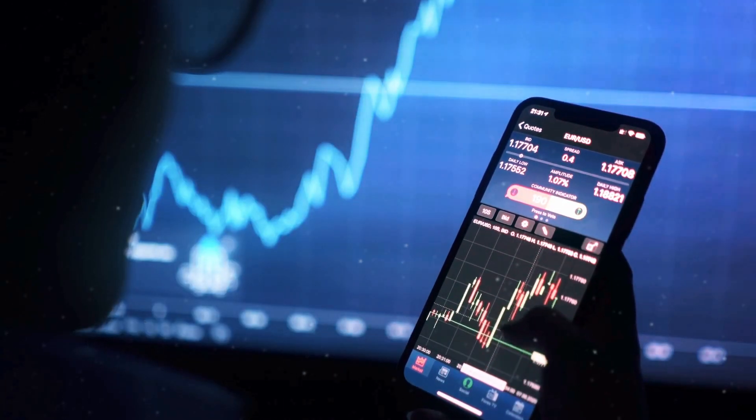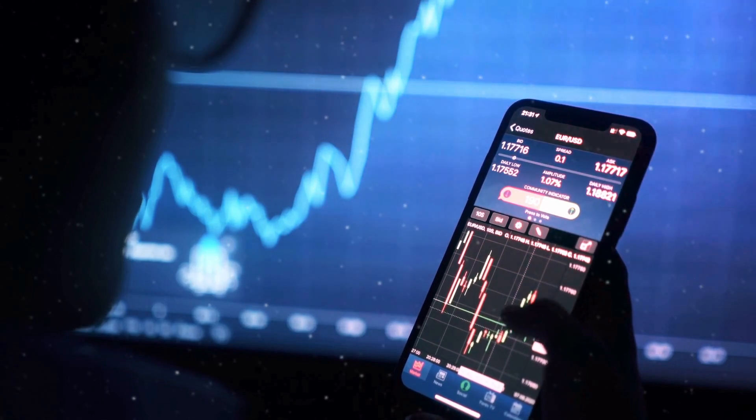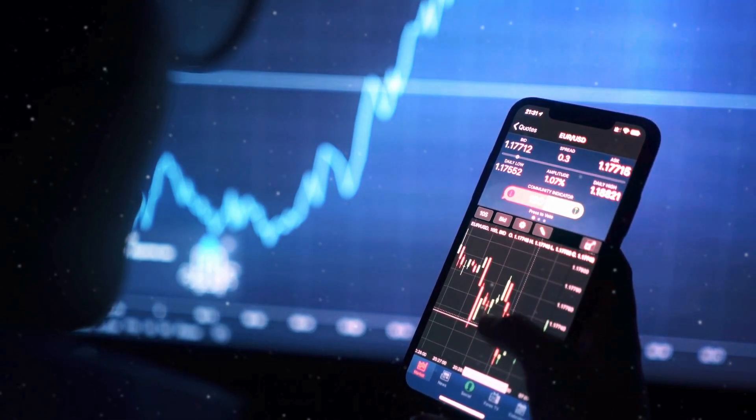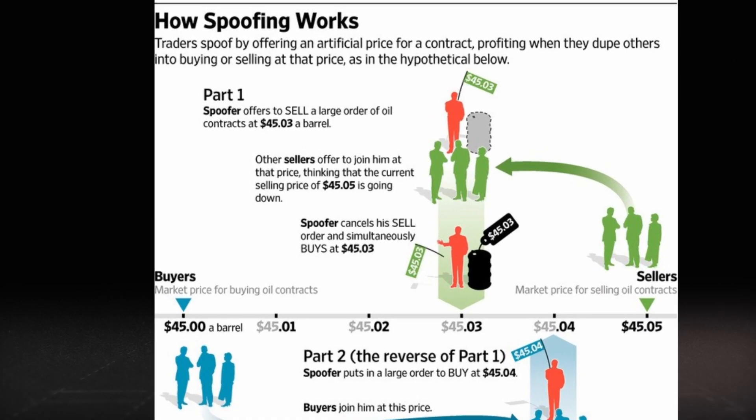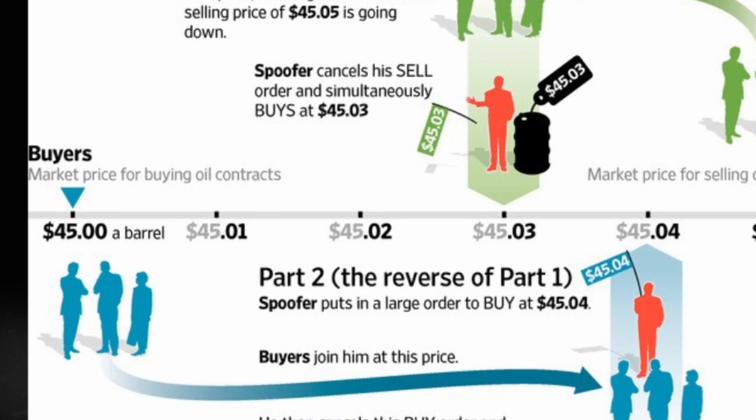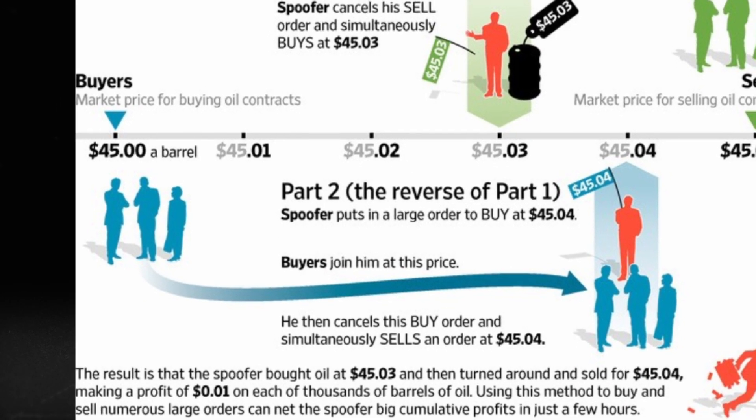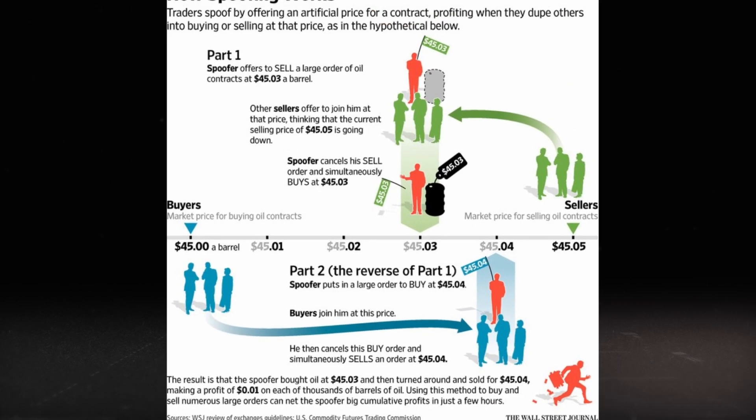In 2013, a group of high-frequency traders figured out they could manipulate stock prices by overwhelming the market with fake orders. They'd place thousands of orders they never intended to execute, just to trick other traders, both human and algorithmic, into thinking there was real market activity. This practice, called spoofing, made them millions before they got caught.